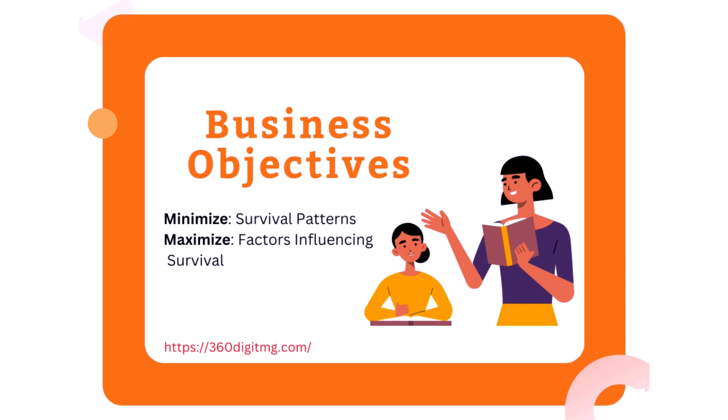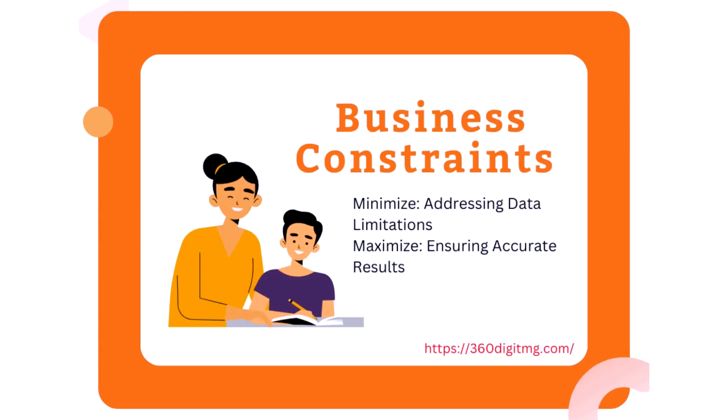The business objective can be split into two parts: minimize and maximize. For survival patterns, we have to minimize in our case, and maximize factors influencing survival rate. For business constraints, we want to minimize data limitations and maximize ensuring accurate results.